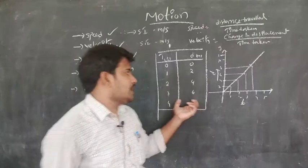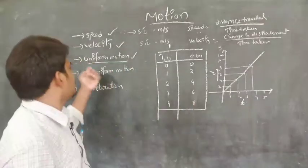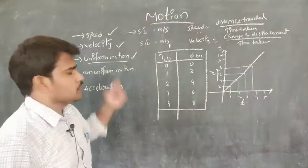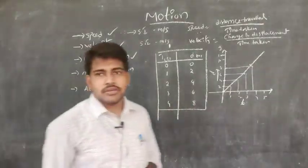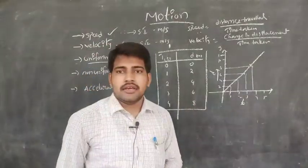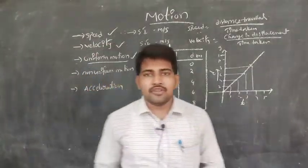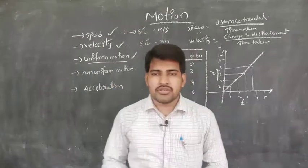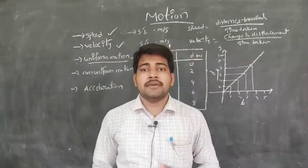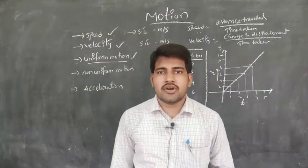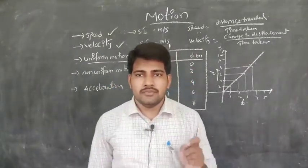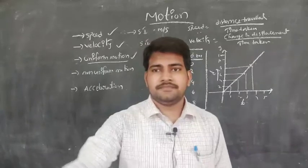This type of motion is called uniform motion. A body is said to be in uniform motion when the velocity does not change — that motion is called uniform motion.